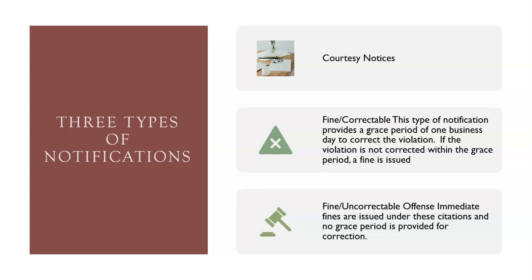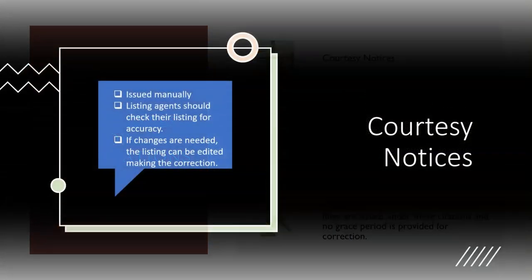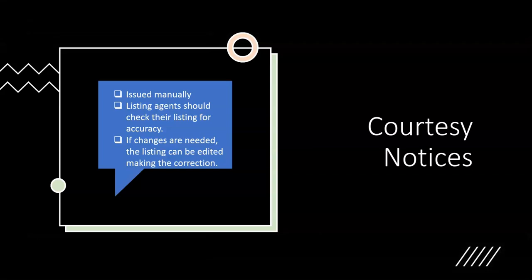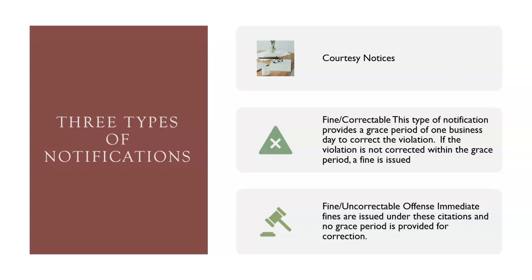Violation notices are issued by the automated system or by the compliance department staff manually. Three types of violation notices can be issued. The first is a courtesy notice — issued manually. Listing agents should check their listing for accuracy; if changes are needed, the listing can be edited making the corrections. Fine-and-correctable notices provide a grace period of one business day to correct the violation. If the violation is not corrected within the grace period, the fines will be issued. Fine-and-uncorrectable notices: the fine is issued immediately and there are no grace periods for correction.